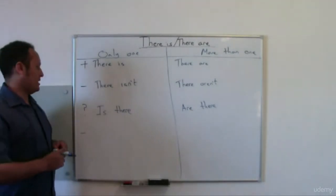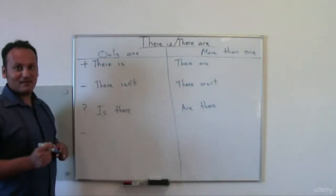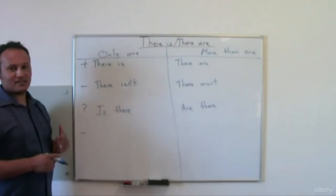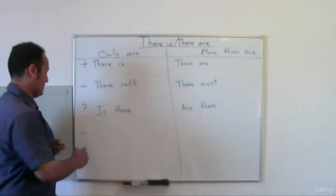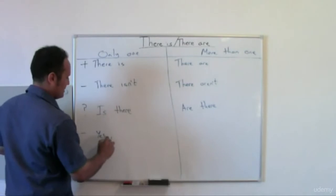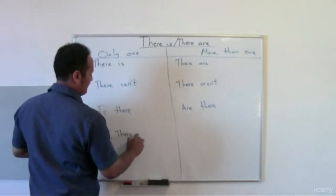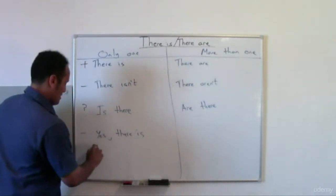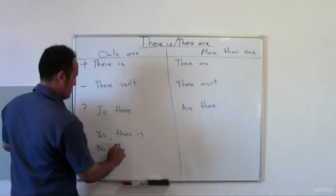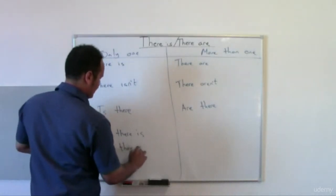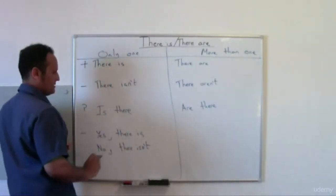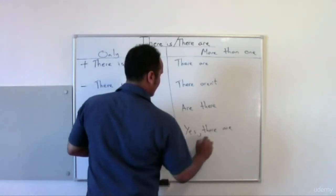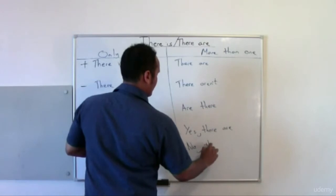What about the answer? For a positive answer: 'Yes, there is.' For a negative answer: 'No, there isn't.' On the plural side: 'Yes, there are.' And 'No, there aren't.'